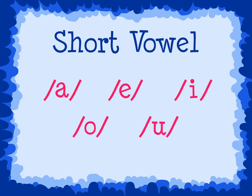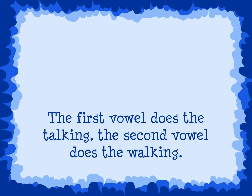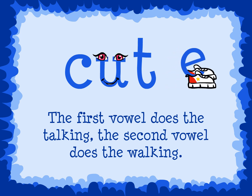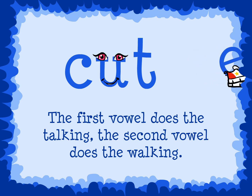We can make long vowel sounds in words by adding an E at the end of the word. Remember this rule: the first vowel does the talking, the second vowel does the walking. This means that we only hear the first vowel sound and the second is silent. We can change all the words we just covered with short vowel sounds to words with long vowel sounds by just adding an E at the end.